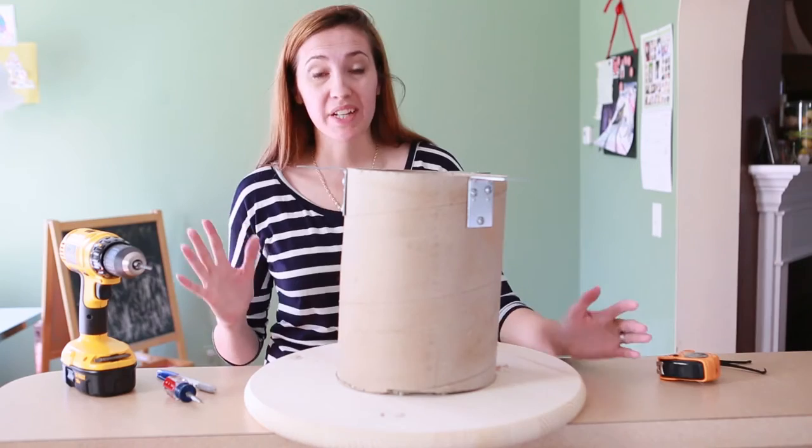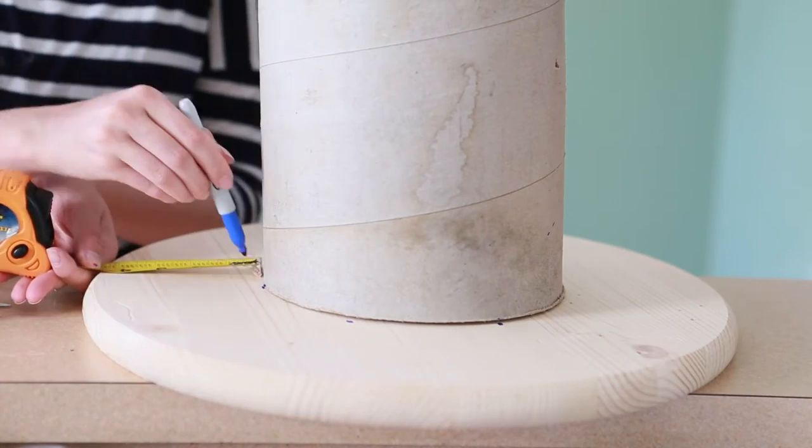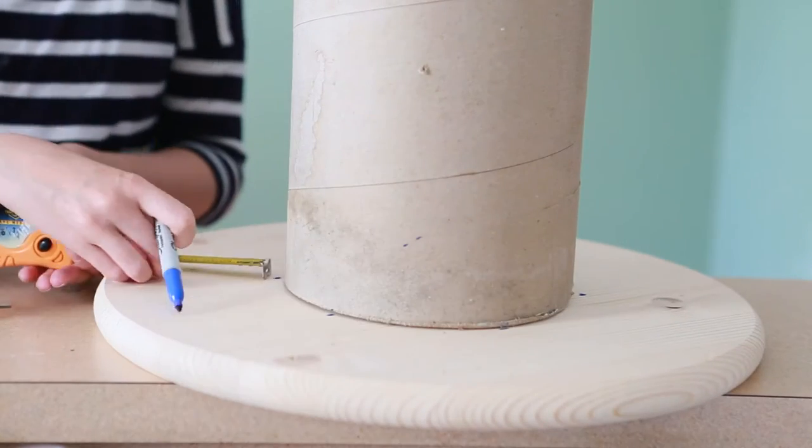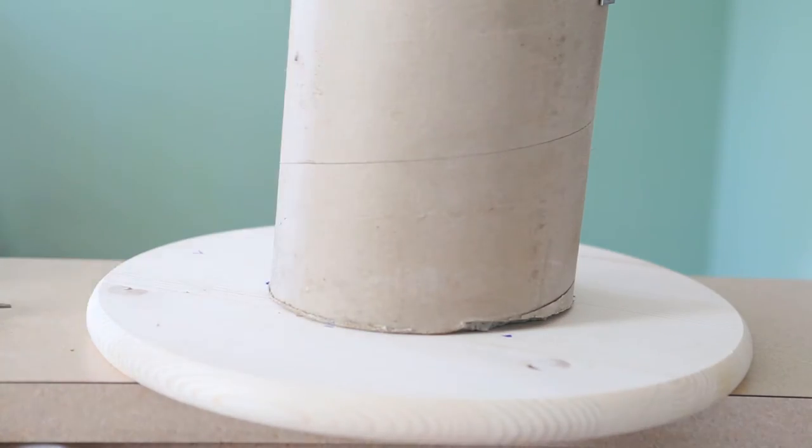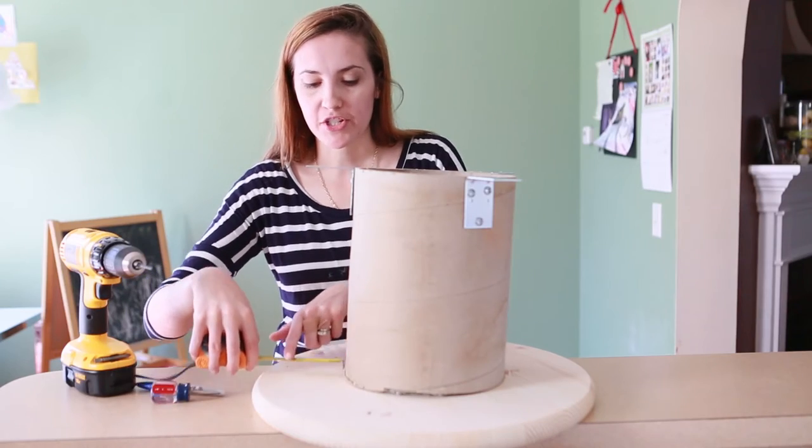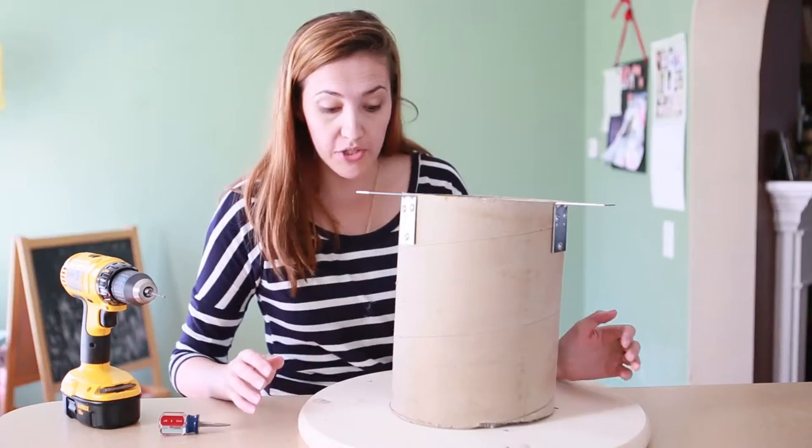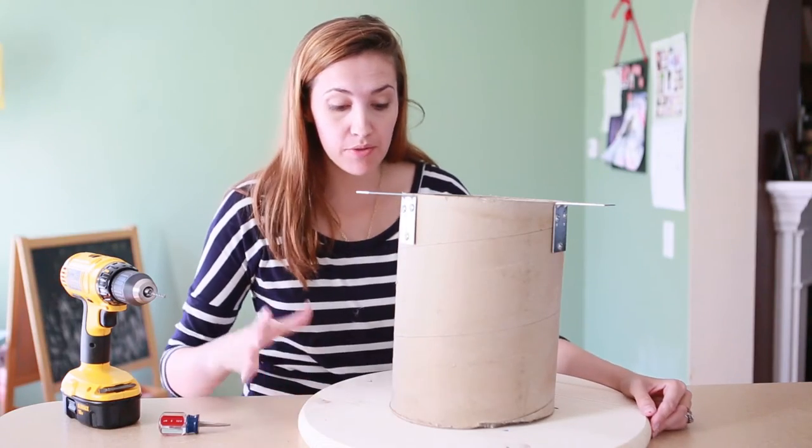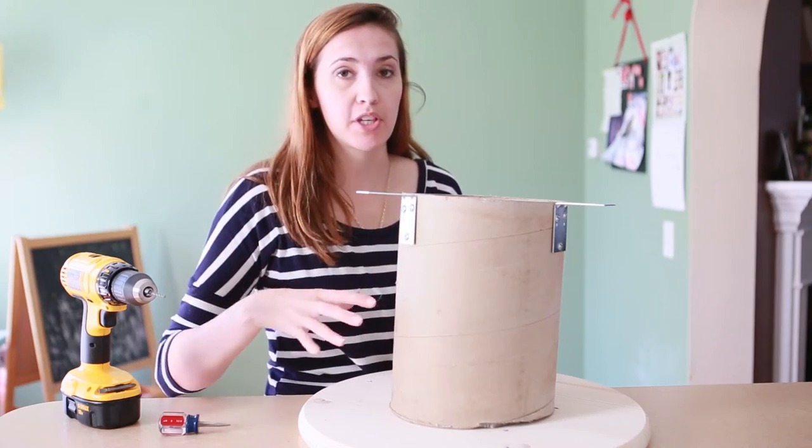Once you have your three corner brackets, we're going to center it onto the wood round. You could just go ahead and eye this, but I do recommend using a measuring tape or a ruler. And just going around your circle and every five inches make a mark. And then you'll be able to eye it better of where exactly your center is. Once you have the center of your wood round marked, then you're going to carefully flip this and secure it into place.